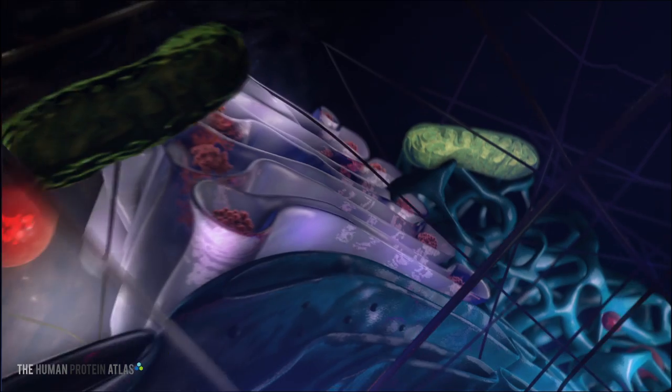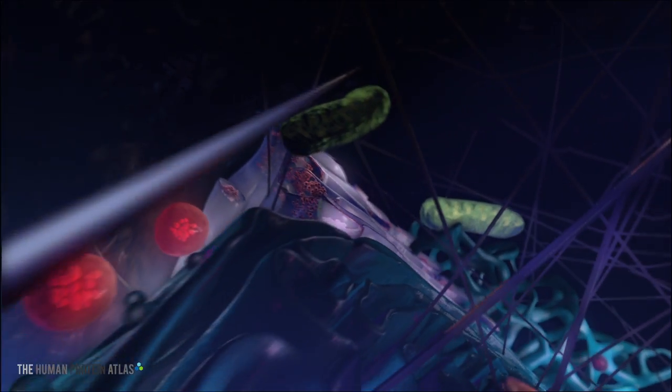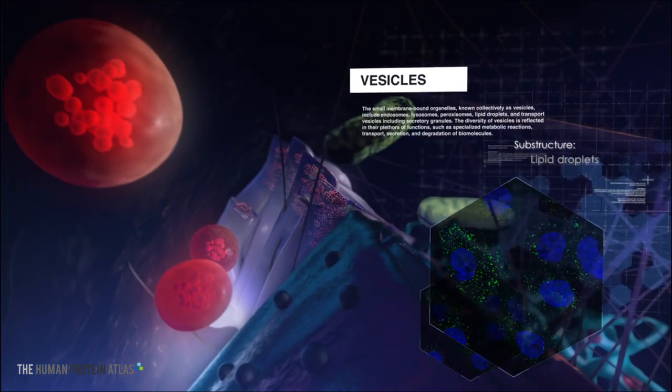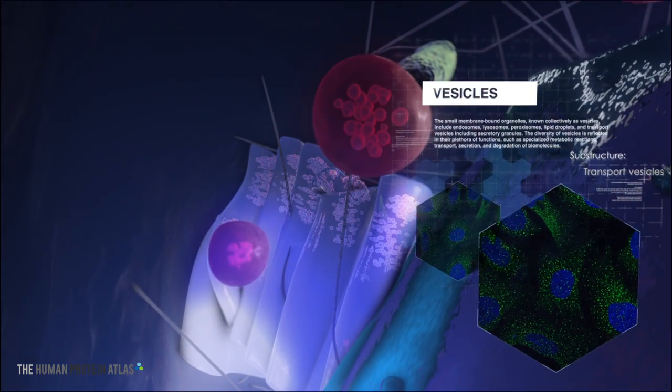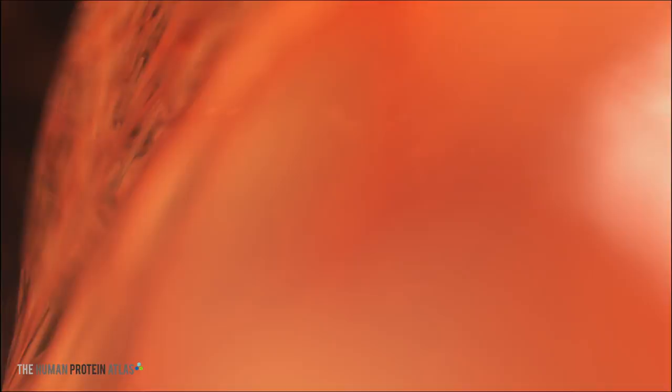Proteins in the cell are transported in vesicles. But there is a multitude of different vesicles in the cell, all with different functions. These functions range from transport to degradation to secretion of biomolecules.